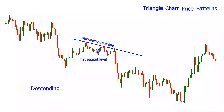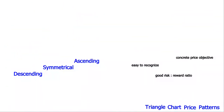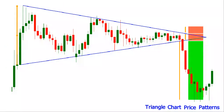In all cases, the stop loss can be placed beyond the opposite trend line. The stop loss distance can be at least as big as the distance between the trend lines, measured at the moment of the breakout.